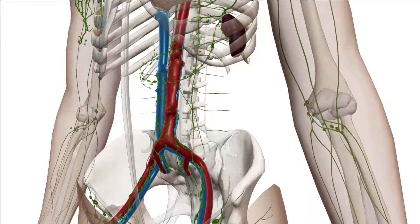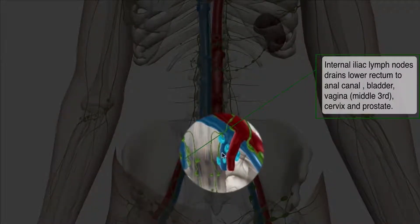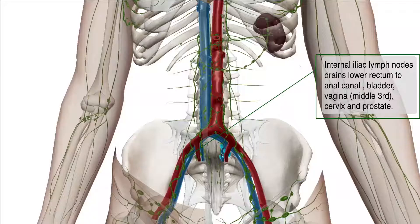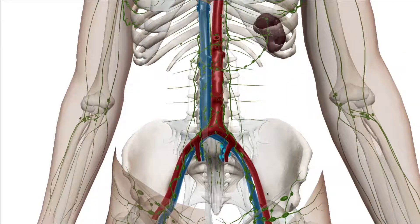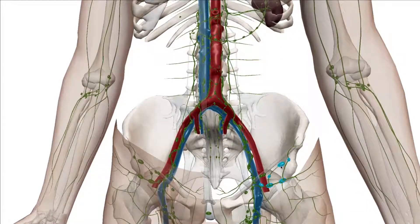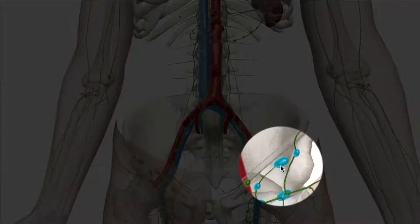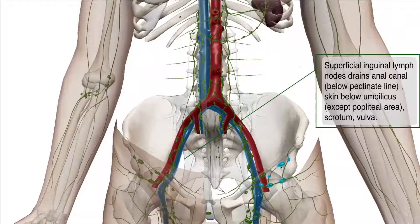The next cluster is the internal iliac lymph nodes, which drain the lower rectum to the anal canal above the pectinate line, the bladder, vagina — especially the mid to lower third — and the cervix and prostate. You also have the superficial inguinal lymph nodes, which drain the anal canal below the pectinate line, the skin below the umbilicus (except the popliteal area), and also drain the scrotum and the vulva. Remember, the internal iliac drains above the pectinate line — that line is very important in dividing the rectum.